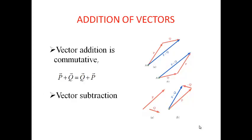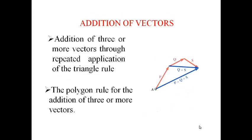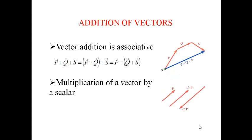Vector addition is commutative, that is P plus Q equals Q plus P. We can subtract vectors also. Addition of three or more vectors through repeated application of a triangle rule. The polygon rule for the addition of three or more vectors. Vector addition is associative, that is P plus Q plus S equals P plus Q plus S.